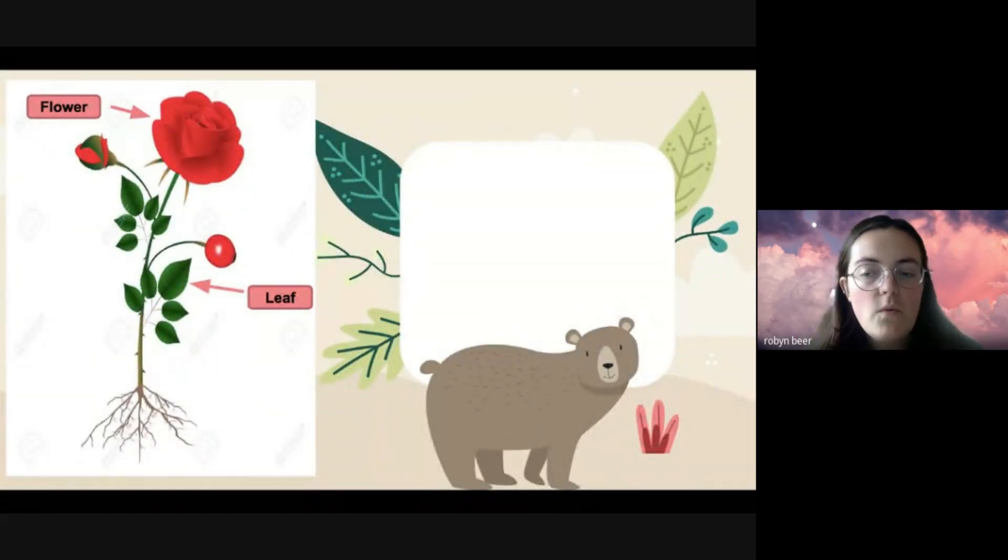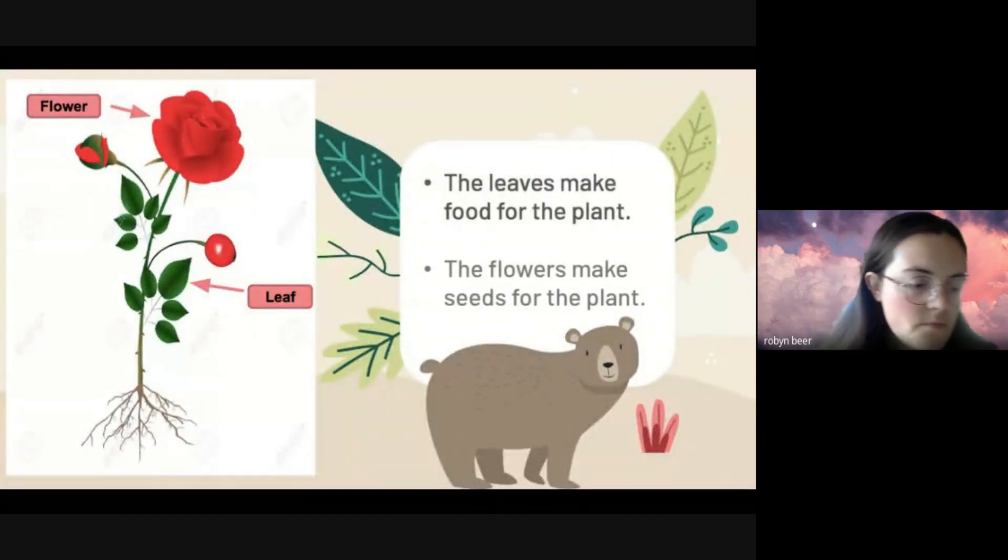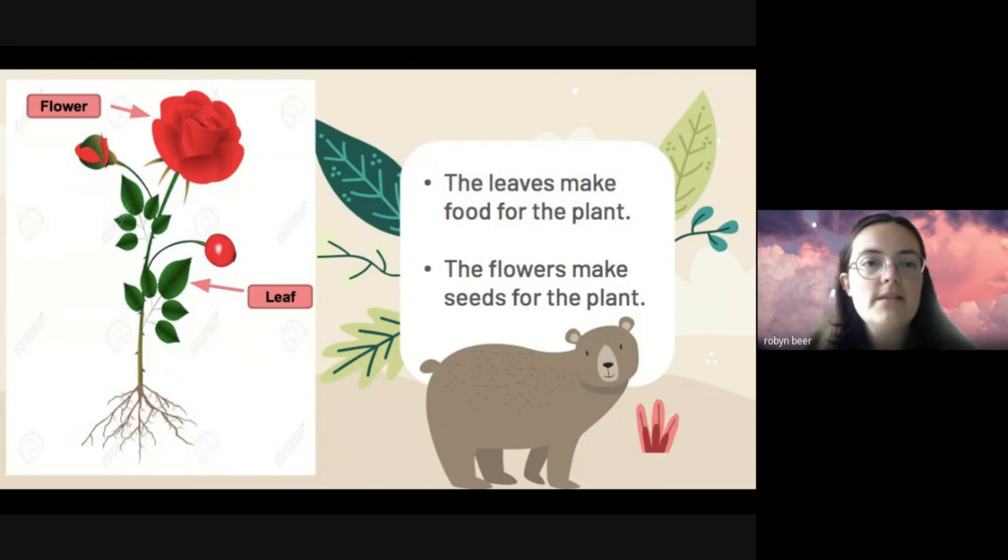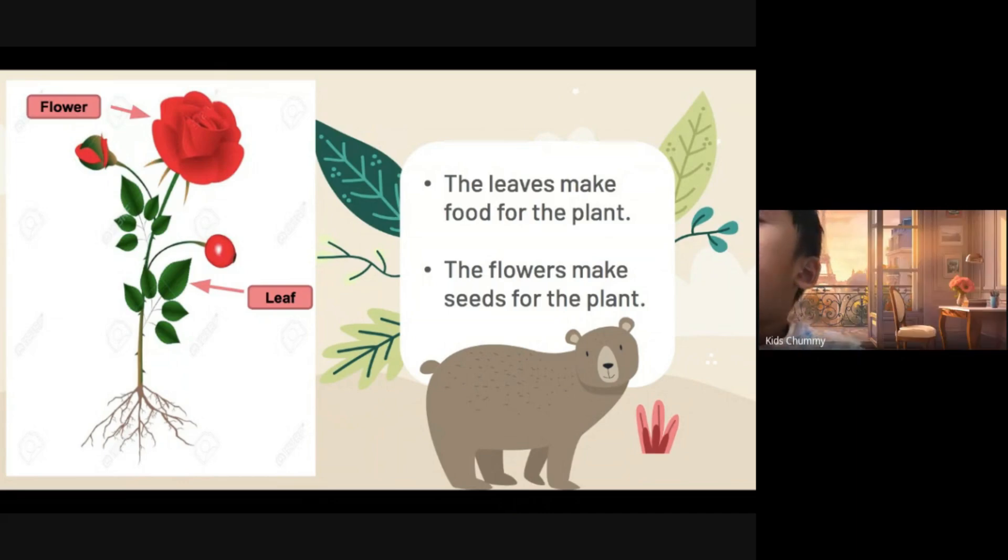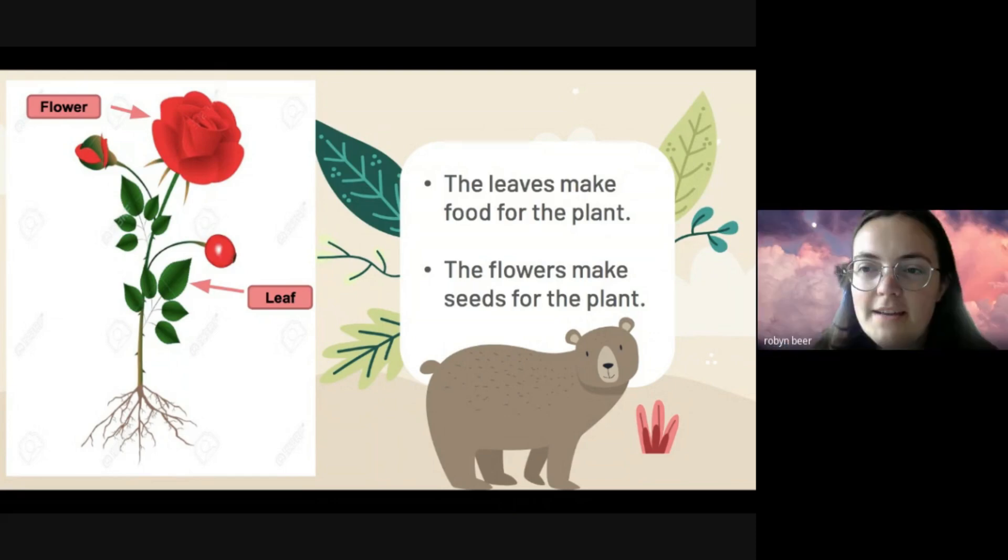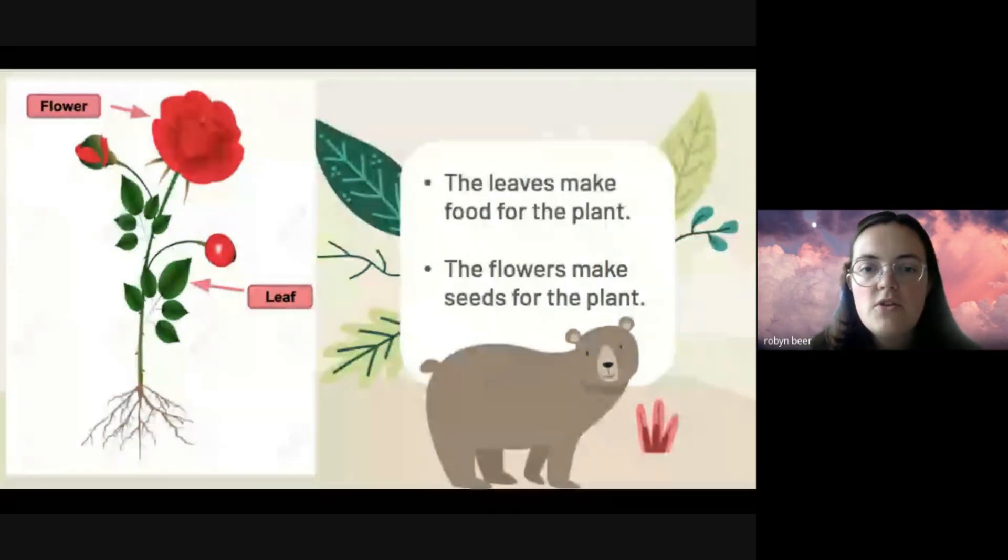So this rose has quite a few leaves on it. One leaf, many leaves. Okay, Tony can you please read for us? The leaves make food for the plants. The flowers make seeds for the plants. Good job, good reading. Okay, so our leaves are very important. They make food for the plant to eat to stay alive, and the flowers make seeds for the plant. We use seeds to grow new plants, so that is also very important.